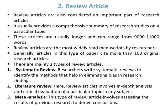There are mainly three types of review articles. Number one is the Systematic review, where researchers identify methods that help in eliminating bias in research findings. Number two is the Literature review, which involves in-depth analysis and critical evaluation of a particular topic. Number three is Meta-analysis, which involves assessing the results of previous research to derive conclusions.